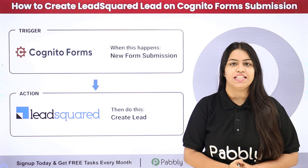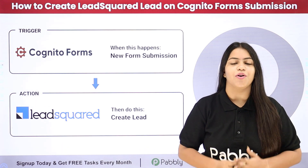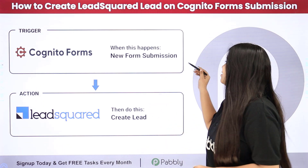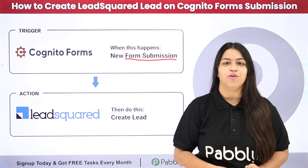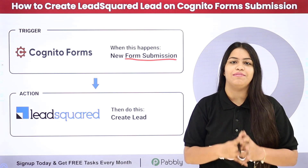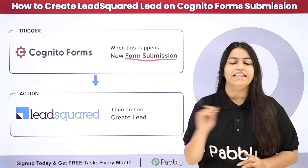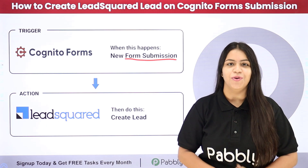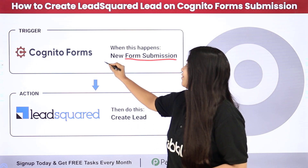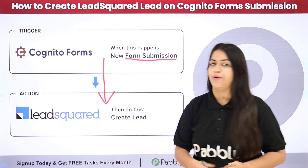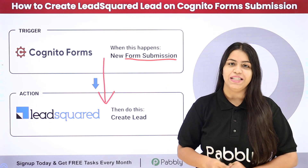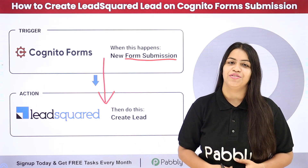I am running a digital marketing agency and we use Cognito Forms to get the details of our potential clients. As soon as a new form submission is made in Cognito Forms, automatically with the help of the same lead details, a new lead should be created in LeadSquared — the lead details should be added into my LeadSquared CRM without any manual efforts. So to do this we are going to create a connection between Cognito Forms and LeadSquared using Pabbly Connect, an amazing automation software.